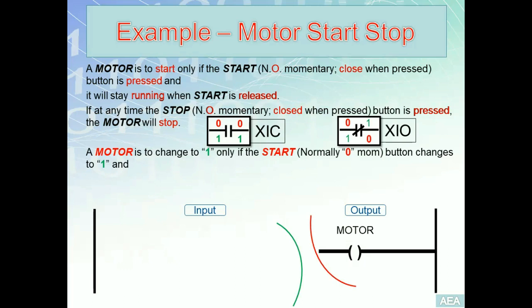The input section can be further divided into two virtual sections: an on section and an off section. In our planning, we group all inputs responsible for energizing the motor together, and all inputs responsible for de-energizing the motor together. Per this requirement, the motor is to change to one when start changes to one. The input involved is start, which belongs in the on section. The question is: XIC or XIO?